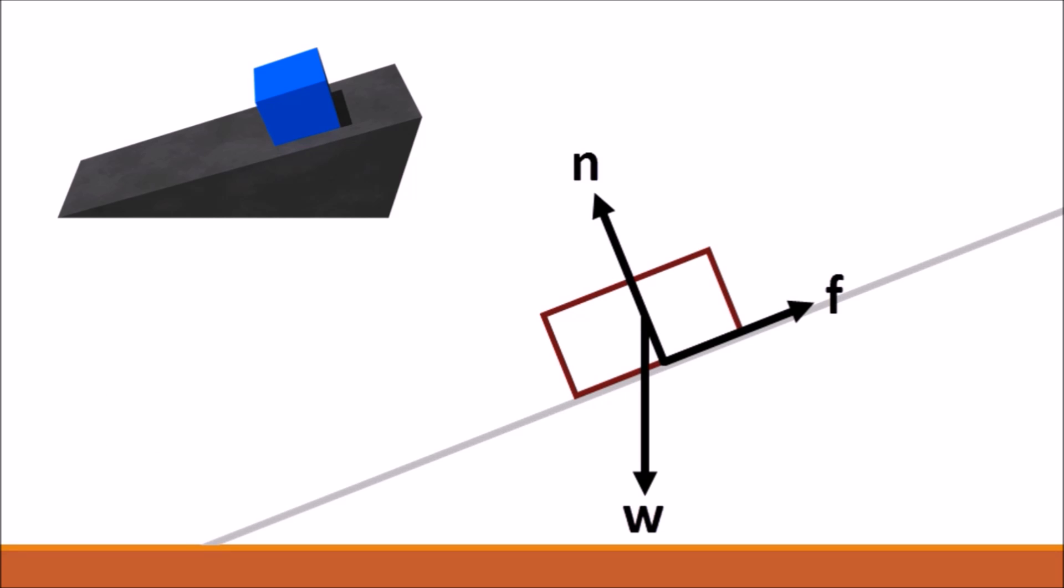For instance, if I take my tissue box and let it slide down a ramp, its free body diagram looks like this. You will learn more about this kind of motion in a later module. For now, all you need to realize is that there are three forces acting on the box.